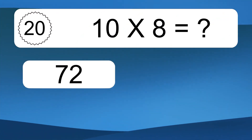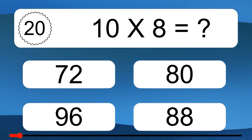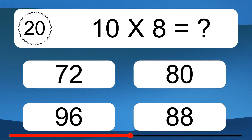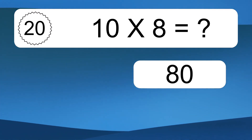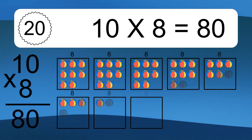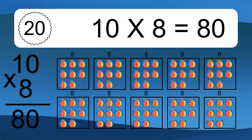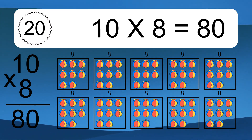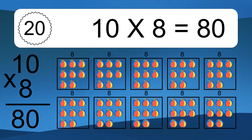10 times 8 equals what? 10 times 8 equals 80. We have 10 boxes and each box has 8 colorful balls inside. If you count all the balls in all the boxes together, you will have 10 times 8 balls. This equals 80 balls.